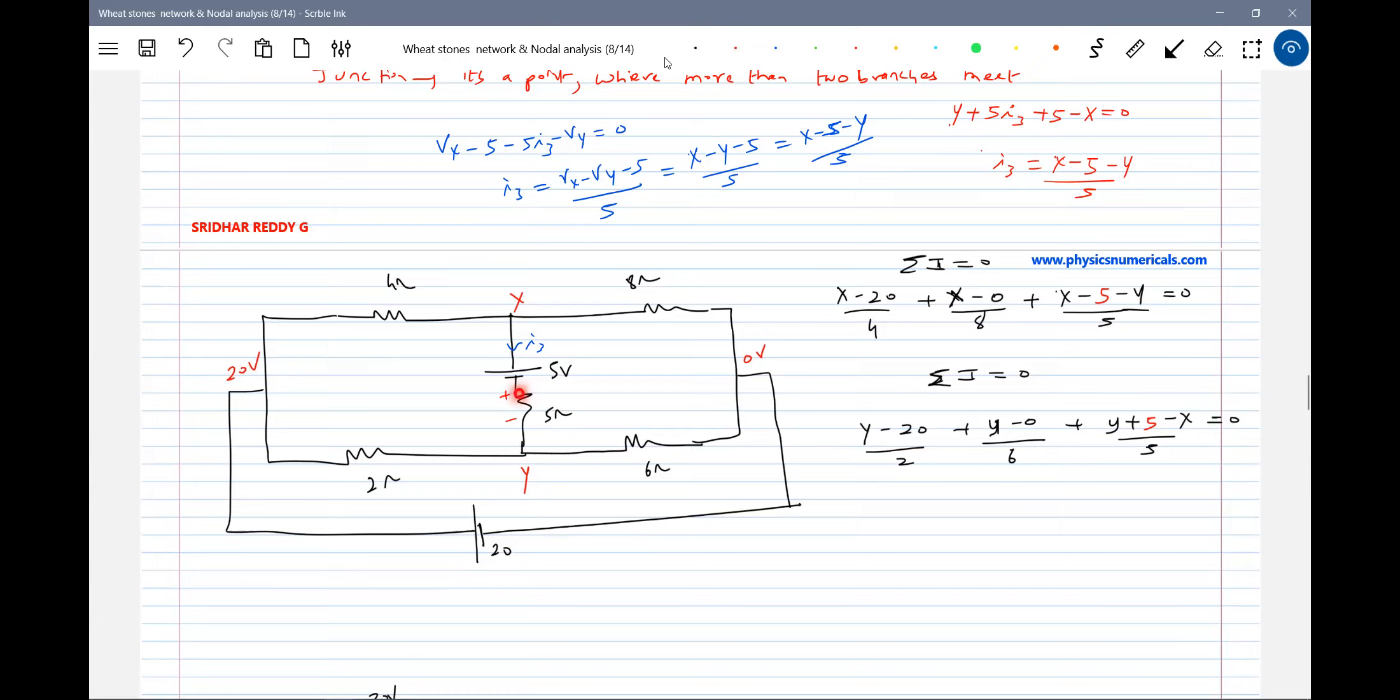Earlier we took I3 like this, but here it will be current entering. Therefore, this will be Y plus 5 minus X by 5. If you rewrite this, Y plus 5 minus X by 5. There's a difference because earlier we assumed current like this, but here we have to assume current in this direction.